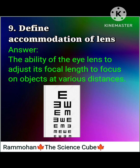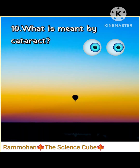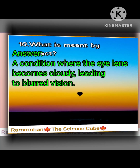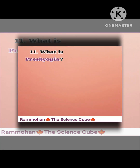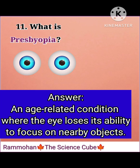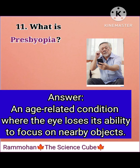Ninth question: define accommodation of lens. Answer: the ability of the eye lens to adjust its focal length to focus on objects at various distances. Tenth question: what is meant by cataract? Answer: a condition where the eye lens becomes cloudy, leading to blurred vision.